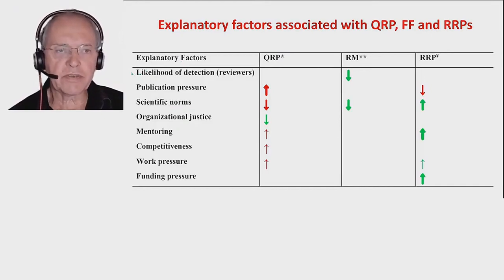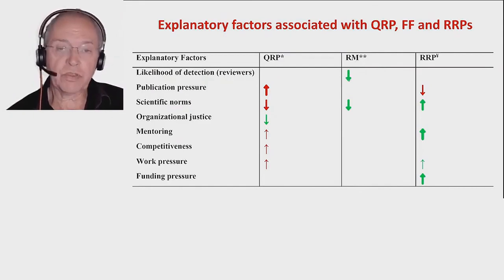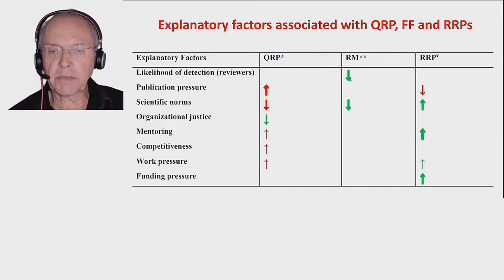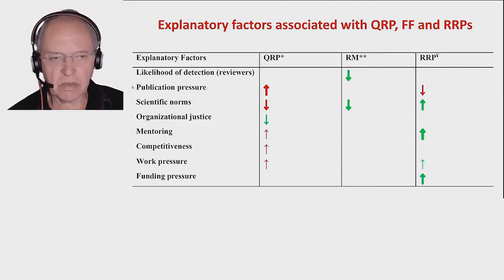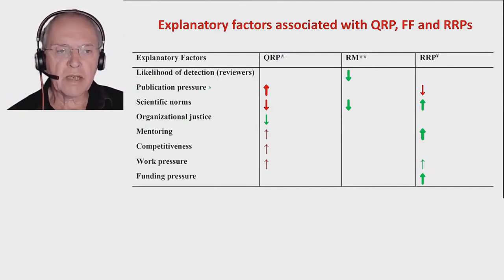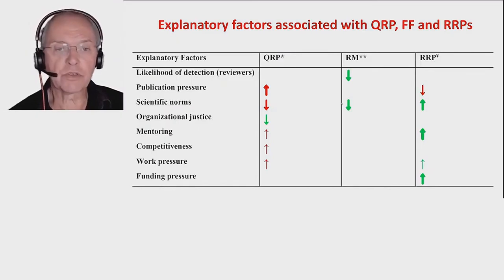Interesting to note is that the likelihood of detection by reviewers — detection of research misconduct specifically — was associated with a lower fabrication and falsification score. So the likelihood of being detected seems to matter. Publication pressure, which we measured with an interesting instrument we have been publishing about before, was associated with a higher prevalence of questionable research practices and lower prevalence of responsible research practices. And that is bad, of course, because you want responsible research practices.